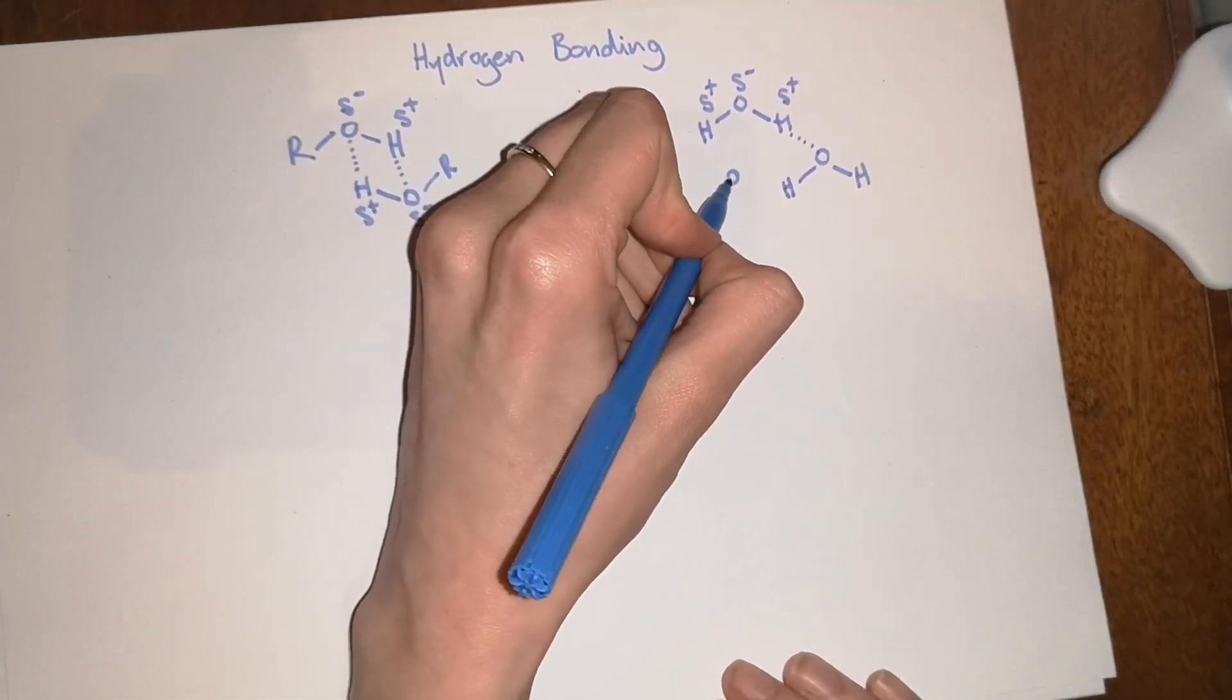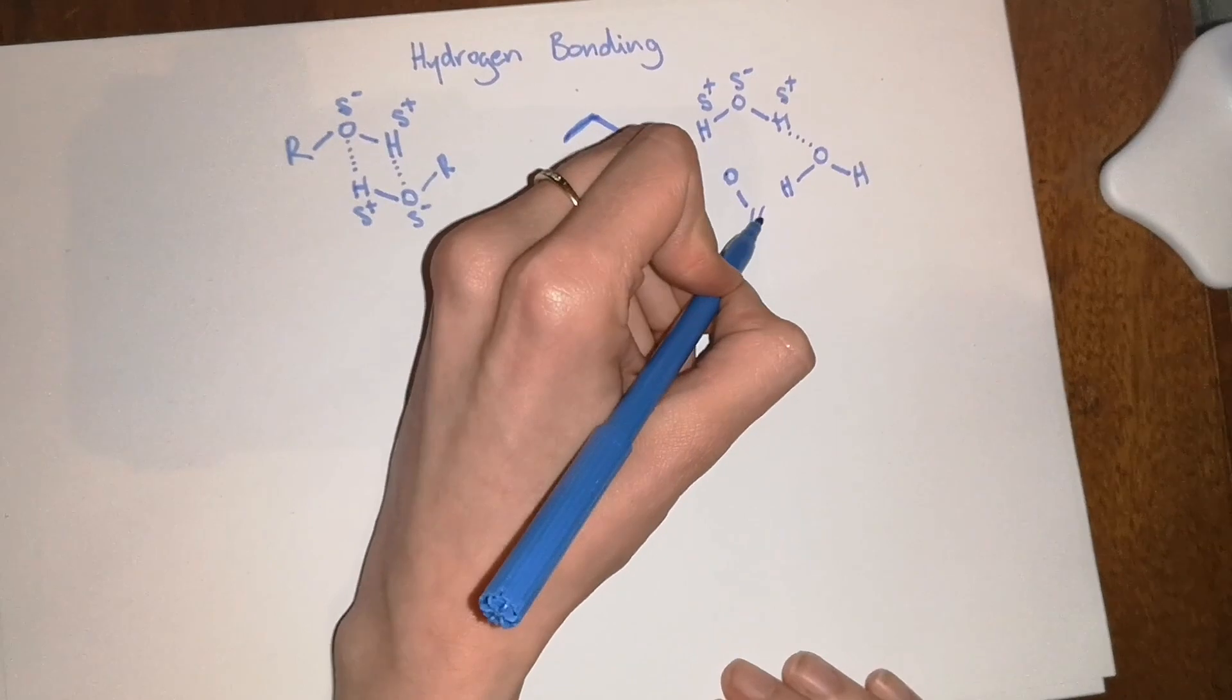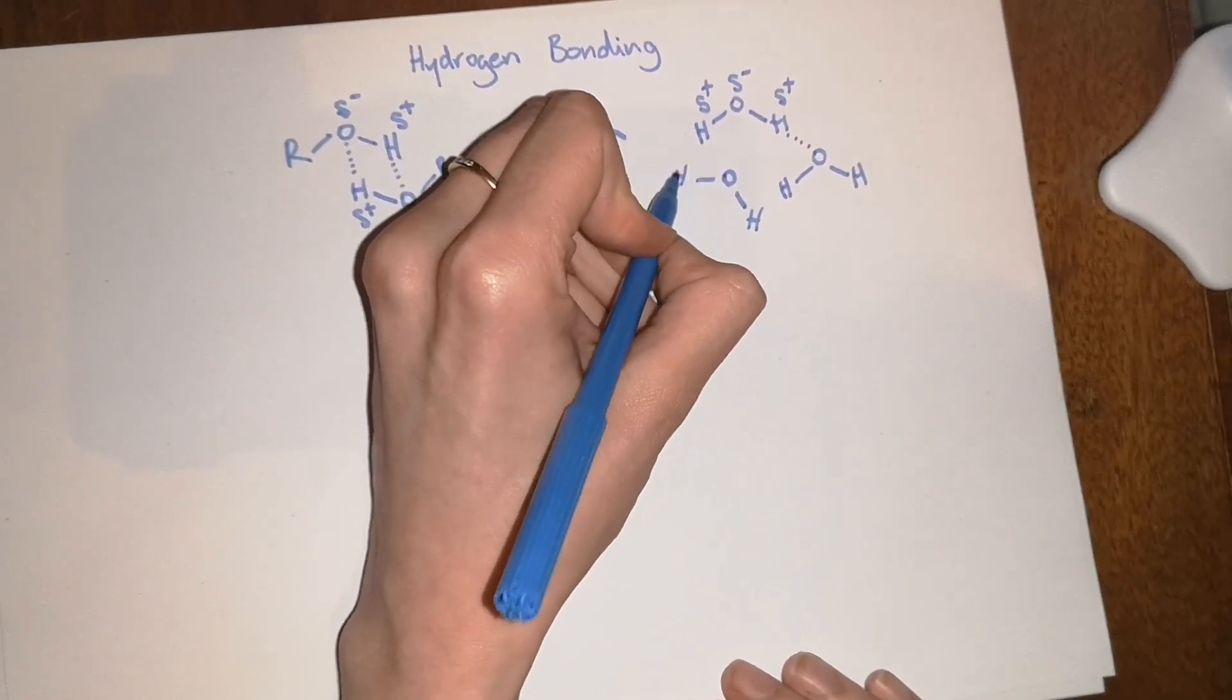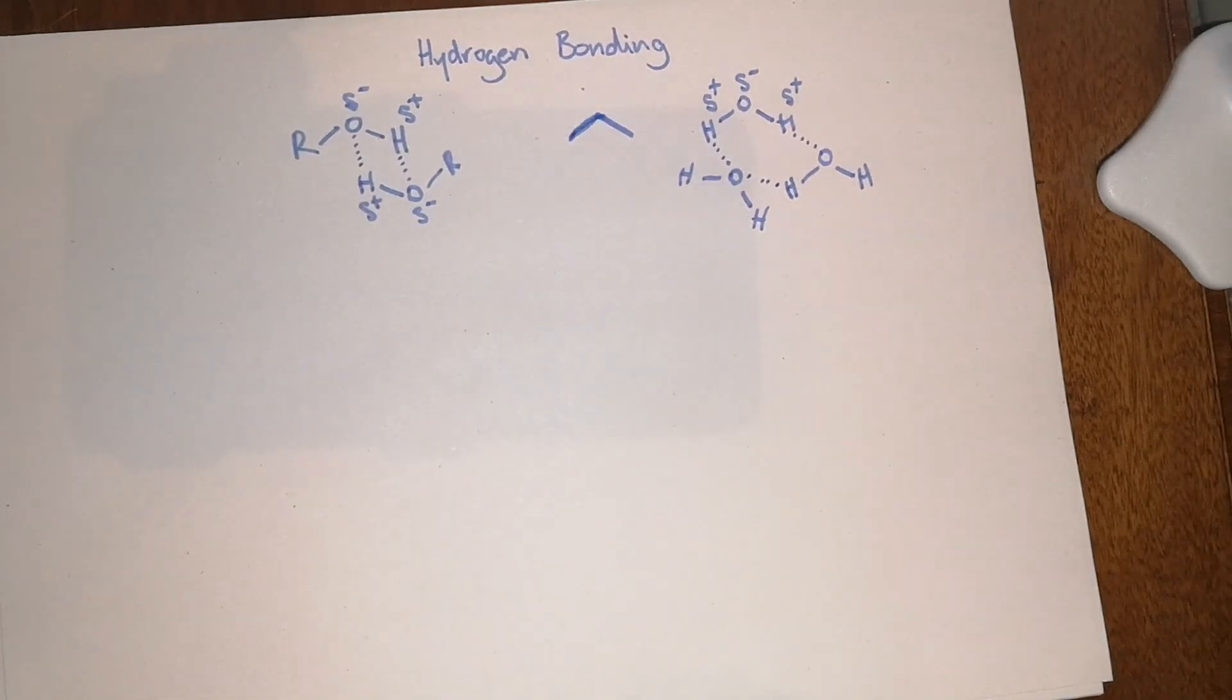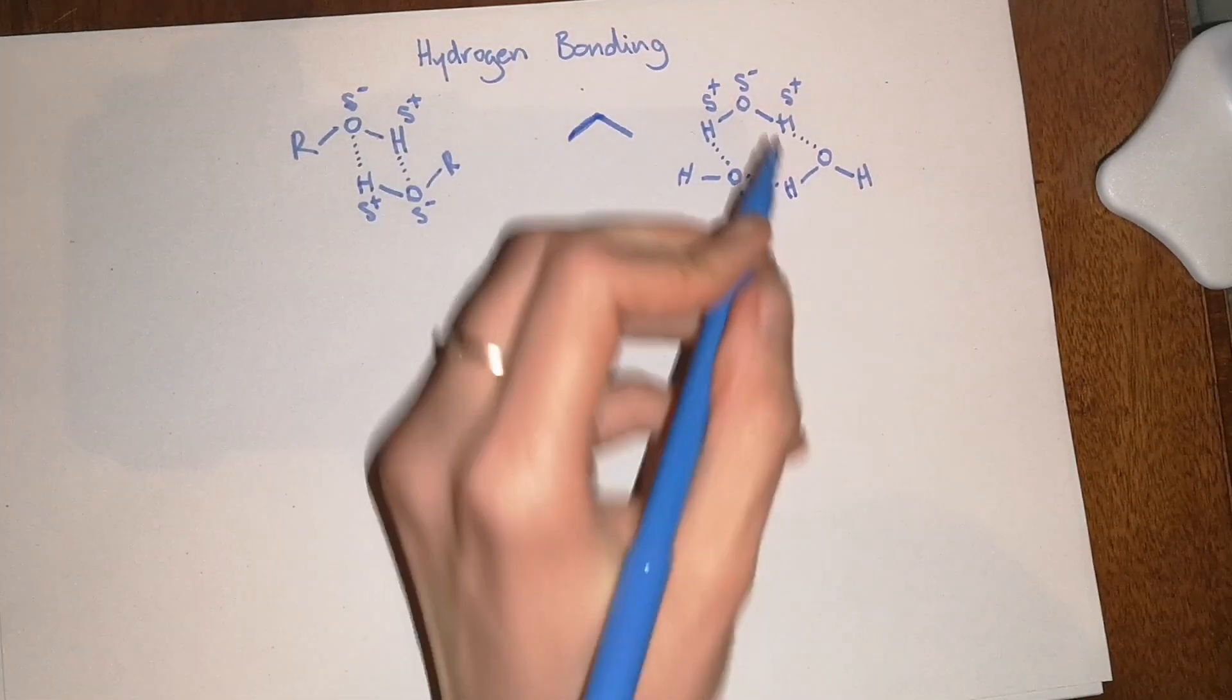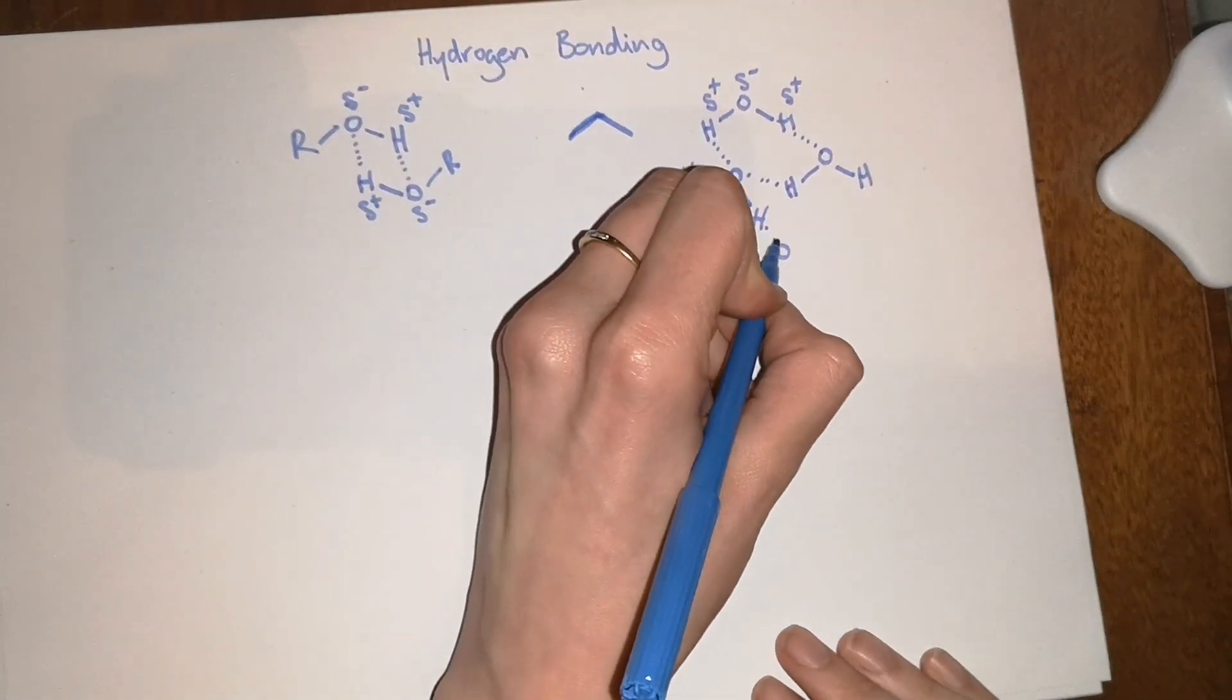Another atom will come along, sorry another molecule of water will come along, and that will form hydrogen bonds as well. What happens is basically you end up with a really extensive network of more and more and more hydrogen bonds.